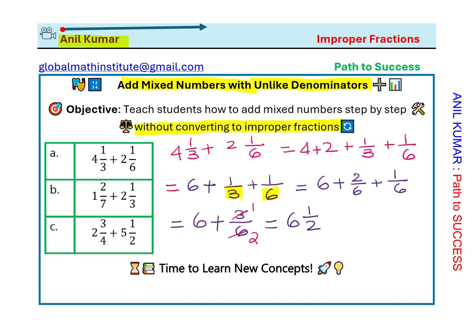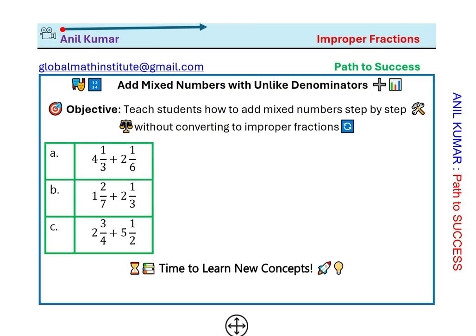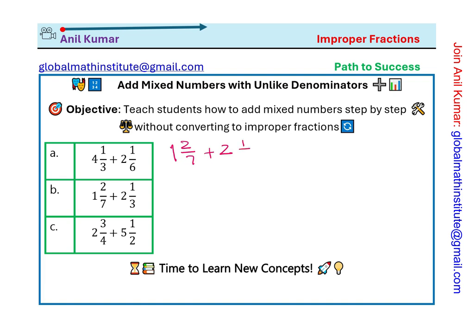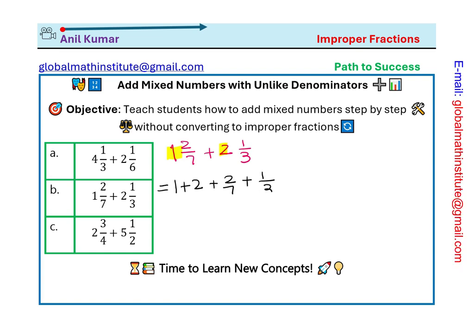Now let's move on to the next question, which is 1 and 2/7 plus 2 and 1/3. Remember, whole numbers can be added directly — that is the strategy. So we first write 1 plus 2 and add them up, while adding the fractions separately. We are not converting to improper fractions; we are working with smaller numbers. So 1 plus 2 is 3. Now, how do we add these fractions?